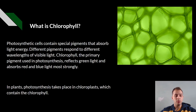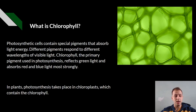What is chlorophyll? Photosynthetic cells contain special pigments that absorb light energy. Different pigments respond to different wavelengths of visible light. Chlorophyll, the primary pigment used in photosynthesis, reflects green light and absorbs red and blue light mostly. In plants, photosynthesis takes place in the chloroplasts which contain the chlorophyll.